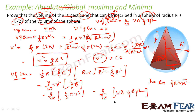Let's understand the logic: we knew we could write h in terms of x. Once we had h in terms of x, we wrote the volume of the cone and differentiated it, getting x² = 8/9 R². With this value of x we found the volume of the cone to be 8/27 times the volume of the sphere.